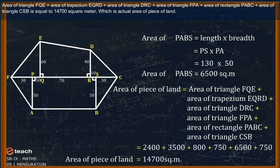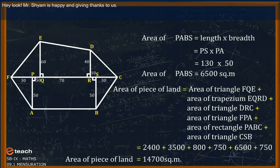The total area of the piece of land is 14,700 square meters, which is the actual area of the piece of land. Mr. Sham is happy and giving thanks to us.